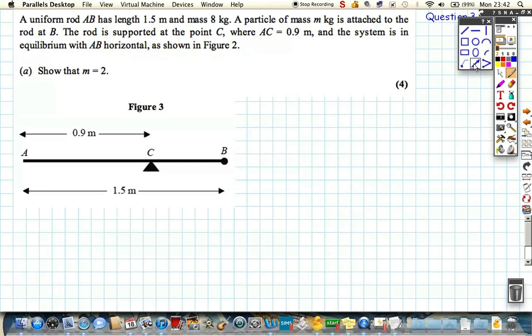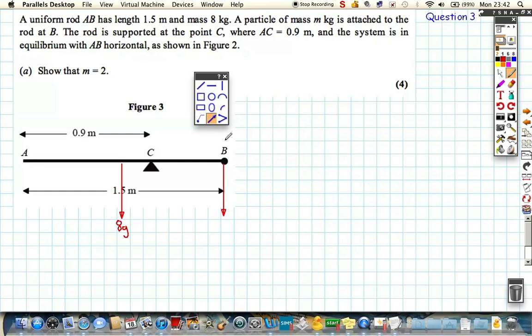So let's start adding some elements to our diagram. Now, it's uniform rod, so exactly in the middle we've got the weight acting down, which in this case is 8g. We've got a weight of B acting straight down at B, a particle which is mg.